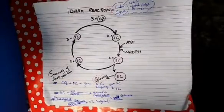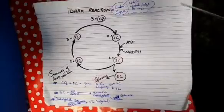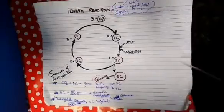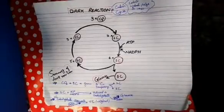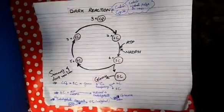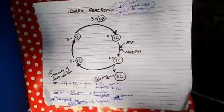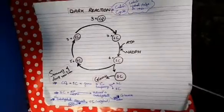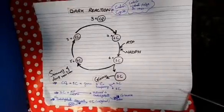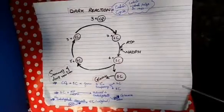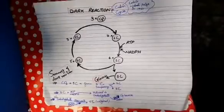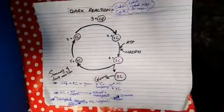Dark reaction takes place in the stroma of the chloroplast. It does not depend on light — it can take place even in the absence of light. That is why it is called the dark reaction.